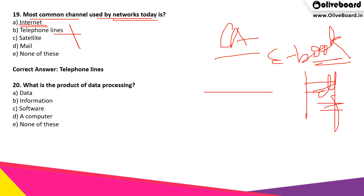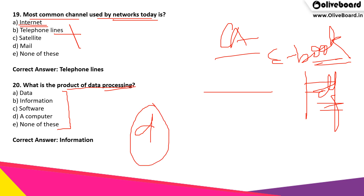What is the product of data processing? Whenever we process data, what is the product or the end result of that? The correct answer is information. Data is the first thing which gets processed, and information is the output from that.